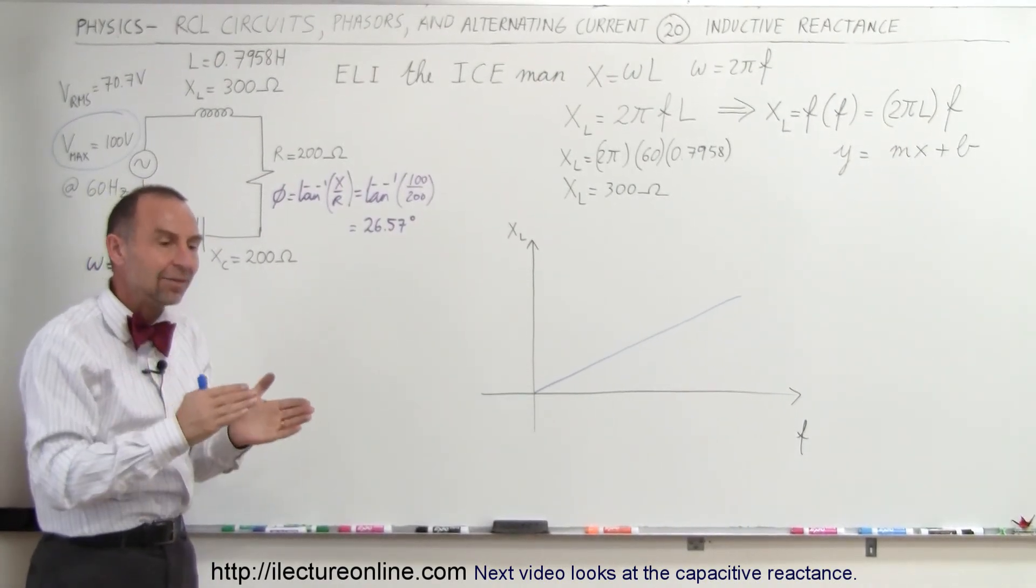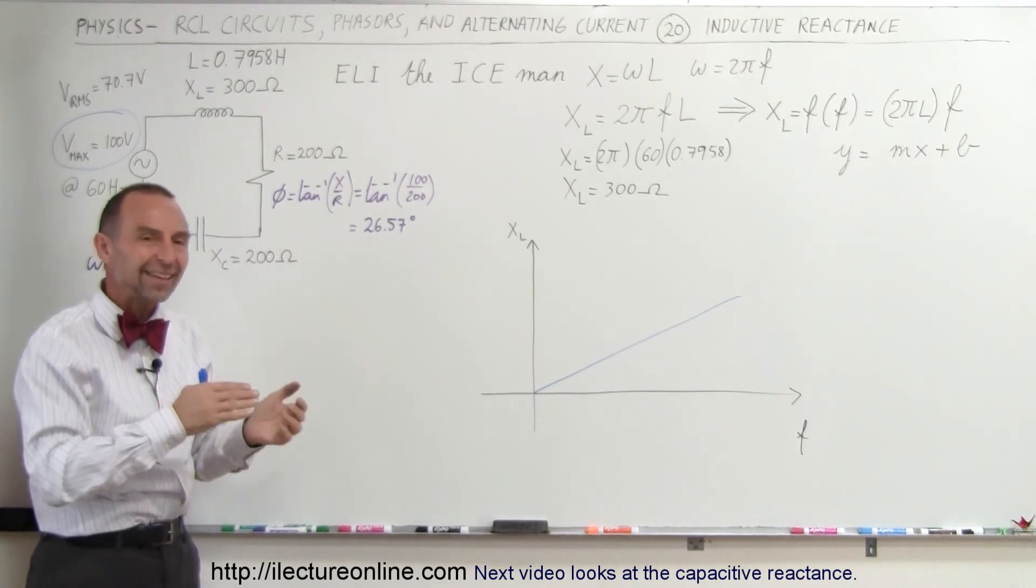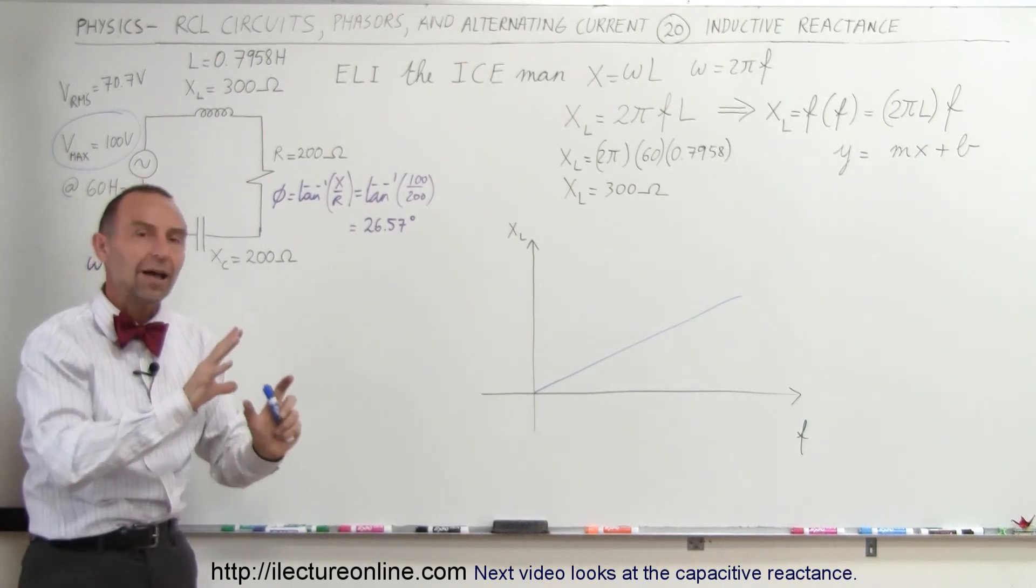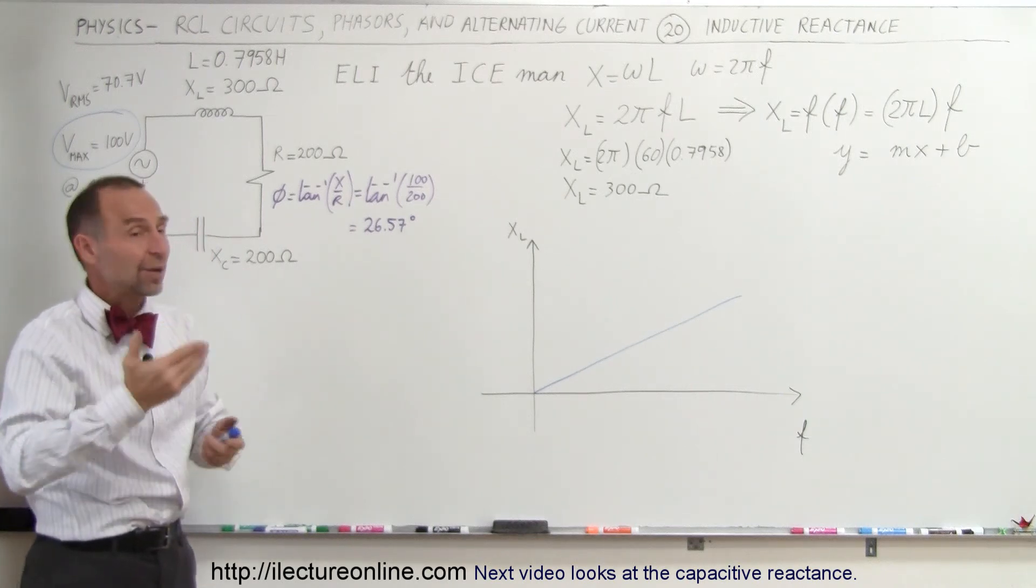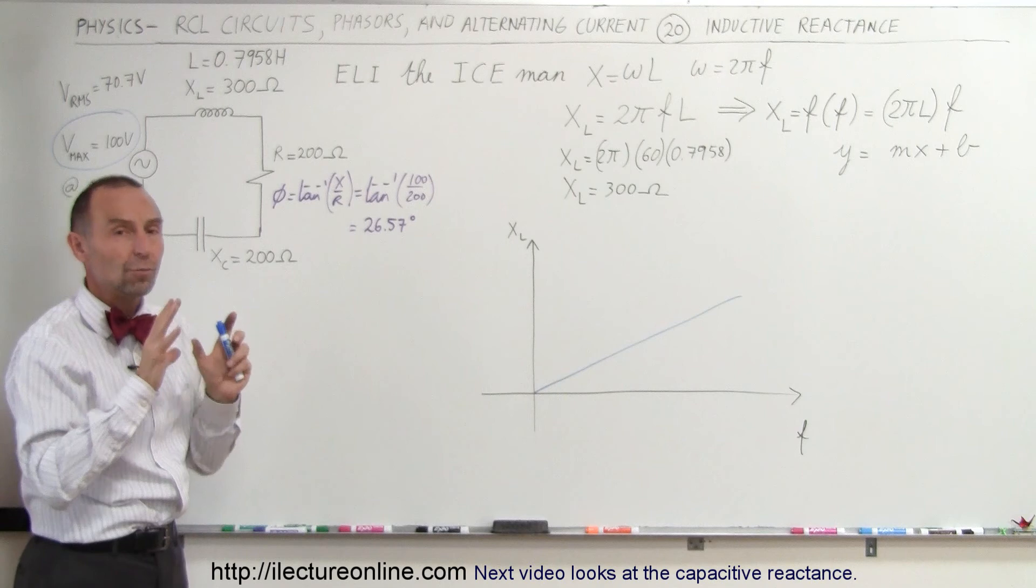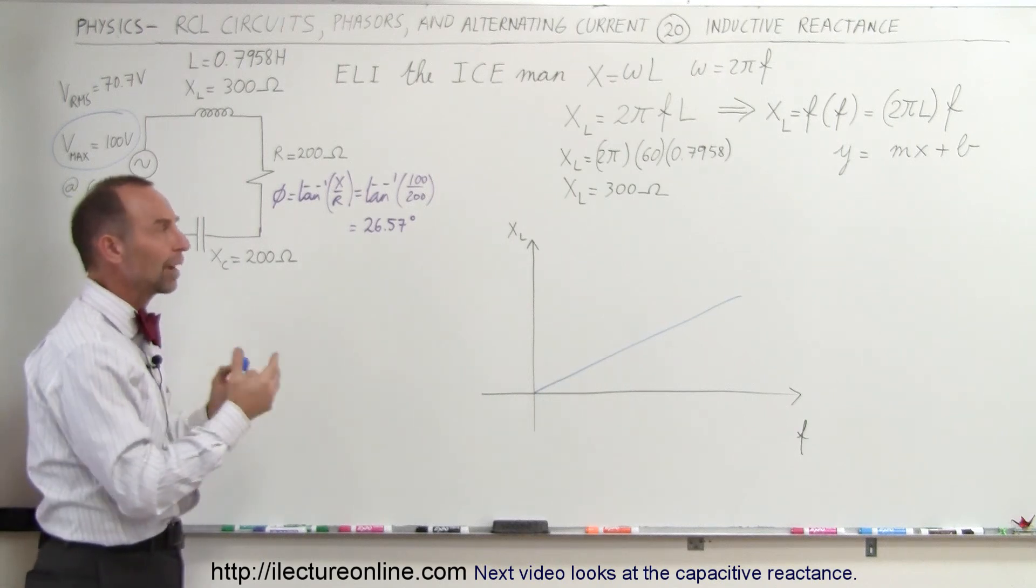If the frequency declines, then the change of the current is less. Less change of the current, less opposition to that, and therefore the reactance drops. So it's simply a function of higher frequency, higher change in the current, more opposition to that change, and therefore higher reactance.